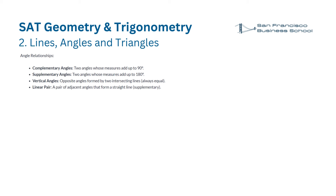Angle relationships. Complementary angles: two angles whose measures add up to 90 degrees. Supplementary angles: two angles whose measures add up to 180 degrees. Vertical angles: opposite angles formed by two intersecting lines, always equal. Linear pair: a pair of adjacent angles that form a straight line — supplementary.